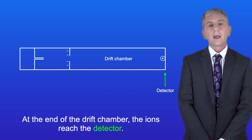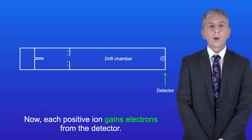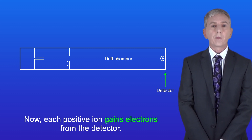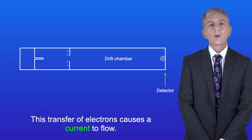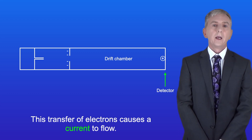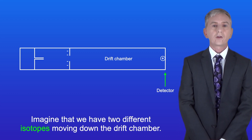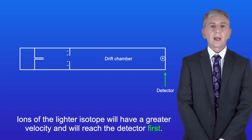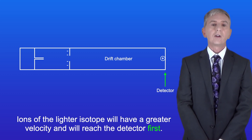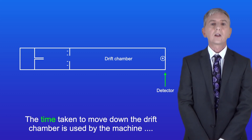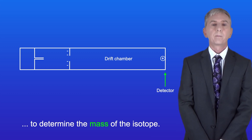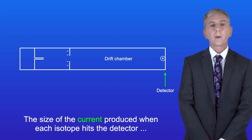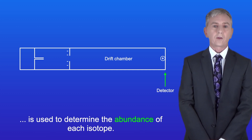At the end of the drift chamber the ions reach the detector. Each positive ion gains electrons from the detector — for example, an ion with a single positive charge will gain a single electron. This transfer of electrons causes a current to flow. Ions of the lighter isotope will have a greater velocity and reach the detector first. The time taken to move down the drift chamber is used to determine the mass of the isotope, and the size of the current produced when each isotope hits the detector is used to determine the abundance of each isotope.